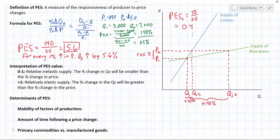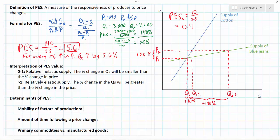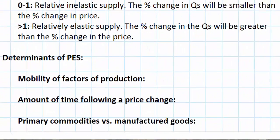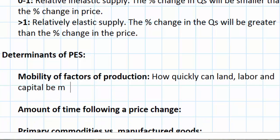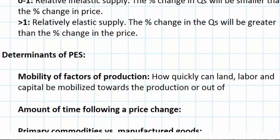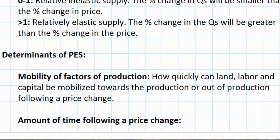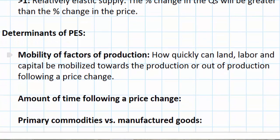That brings us to the determinants of PES. The primary determinant of PES is the mobility of the factors of production that go into producing a good — land, labor, and capital. Whether producers of a good can be highly responsive or relatively unresponsive to price changes depends primarily on how quickly land, labor, and capital can be mobilized towards or out of production following a price change. Goods for which resources can be mobilized relatively quickly — such as blue jeans, which require low-skilled workers, factory equipment, and raw materials like cotton and blue dyes — allow manufacturers to increase production quickly if the price rises by 25%.